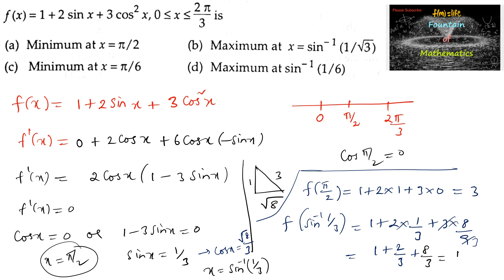Upon simplification, f(sin⁻¹(1/3)) = 13/3, which is above 4, while f(π/2) = 3. So the minimum value is at x = π/2. Option A is correct. The other options — maximum at sin⁻¹(1/√3) or sin⁻¹(1/6), or π/6 — do not give valid critical points in the interval.